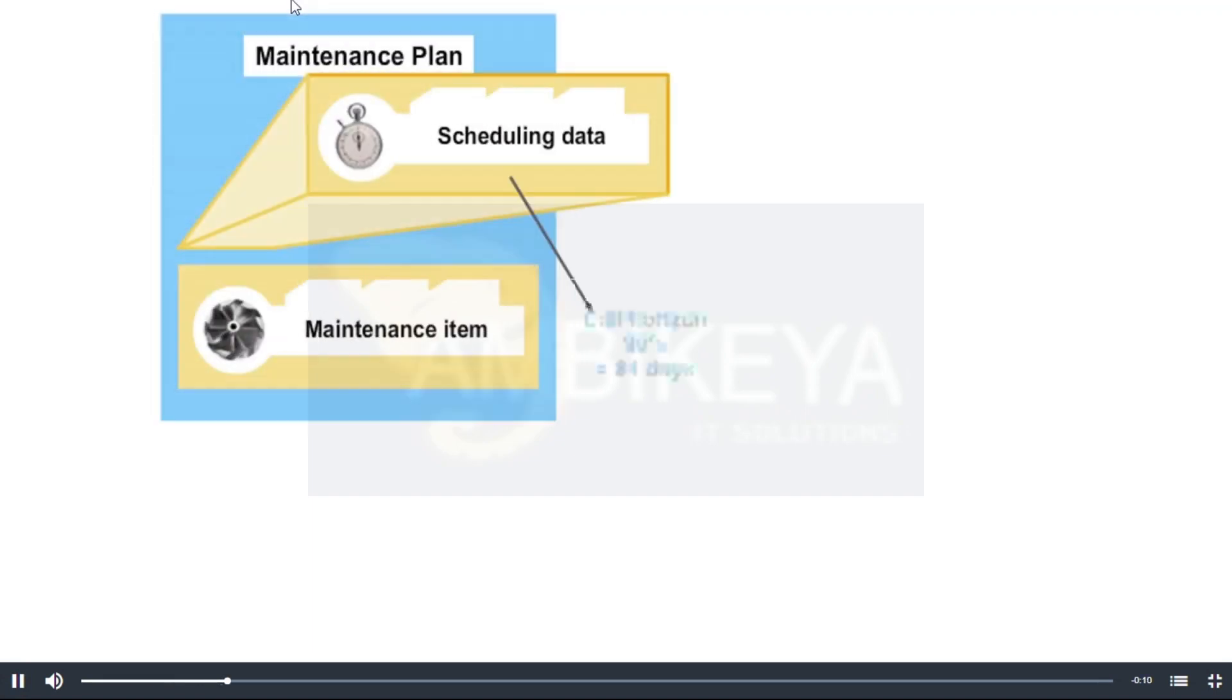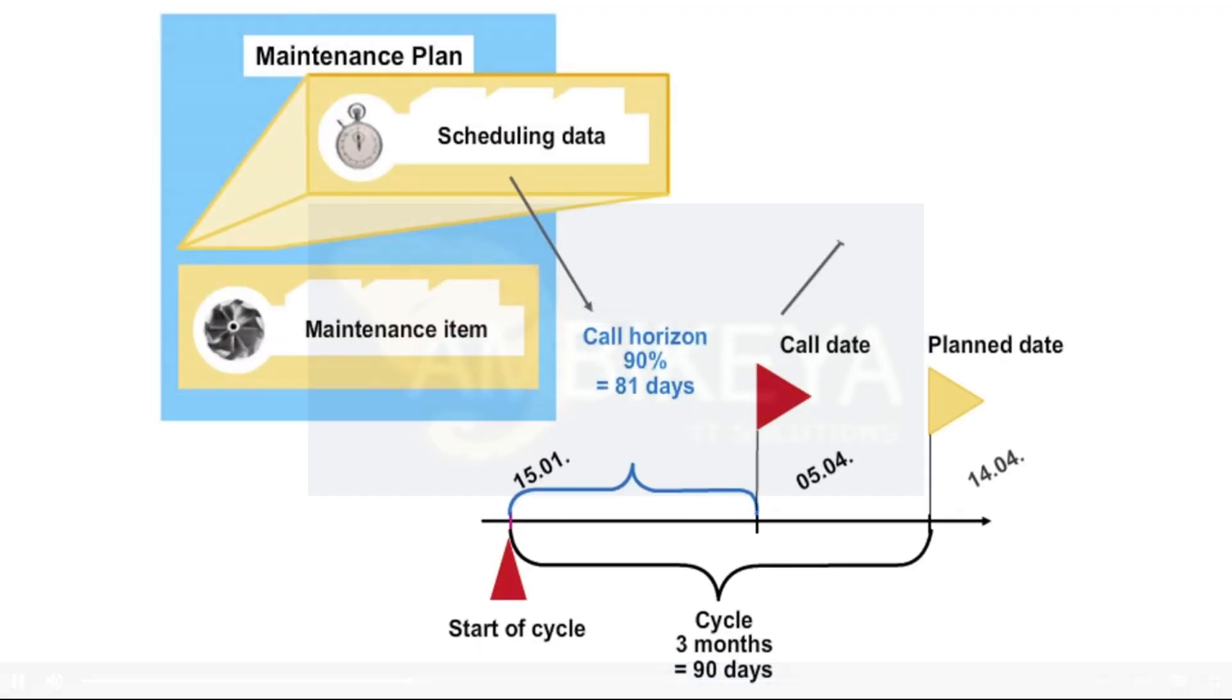The call horizon is specified as a percentage and refers to the duration of the cycle. It specifies when an order should be generated with reference to a calculated maintenance date.